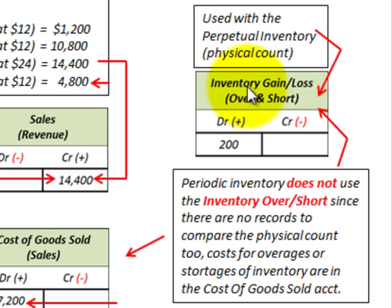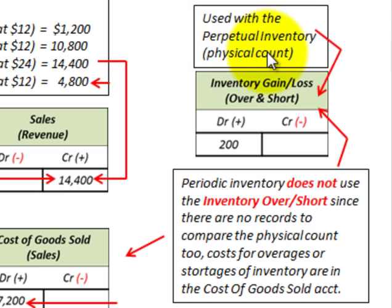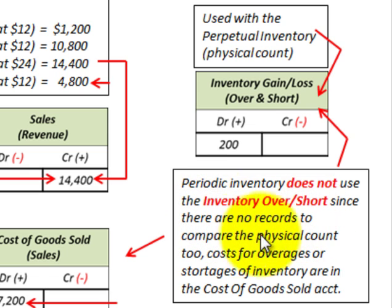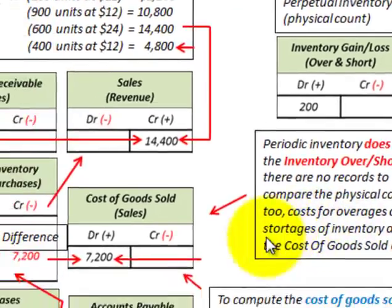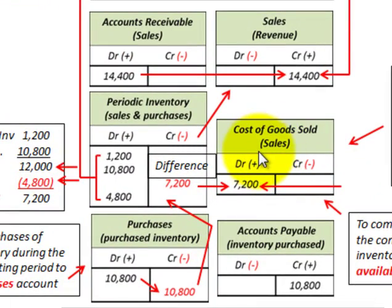Normally with perpetual inventory, you have an inventory over-and-short account for any losses or gains discovered during a physical count, and the inventory book amount is adjusted against that count. But with periodic inventory, there is no inventory over-and-short account since there are no records to compare the physical count to. Any costs for overages or shortages are included directly in the cost of goods sold account.